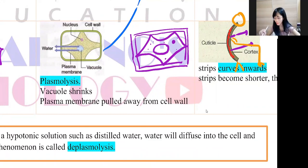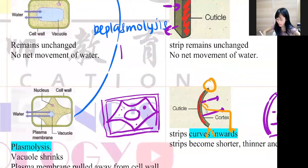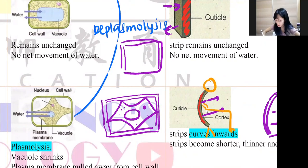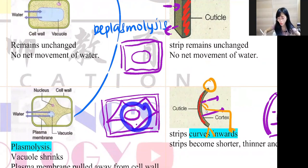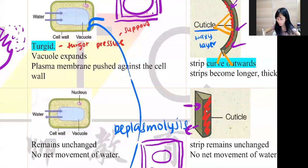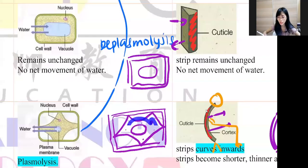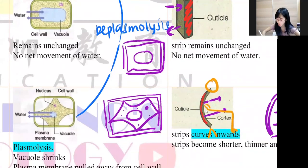If they ask you to draw the middle diagram — no net movement of water — draw a normal-sized vacuole, not too big and not too small. Draw the nucleus and dots to represent the cytoplasm. In your textbook, this condition is also called flaccid.